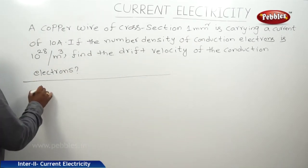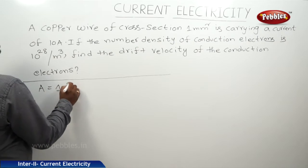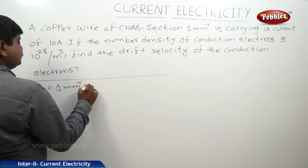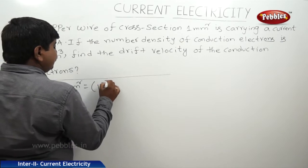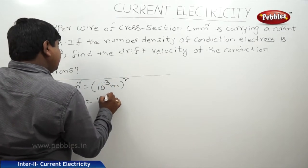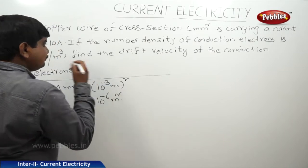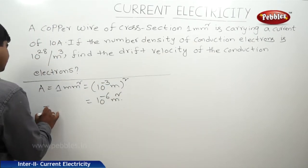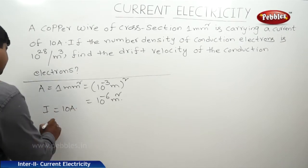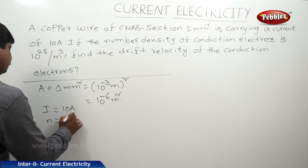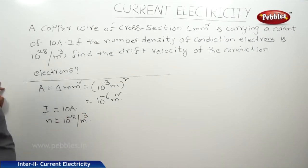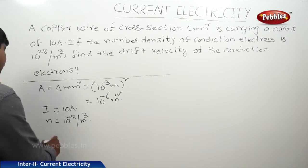The area of cross-section is 1 millimeter square, which we can write as 10 to the power of minus 3 meter whole squared, that is 10 to the power of minus 6 meter square. The current carried by this wire is 10 amperes, and the number density n is equal to 10 to the power of 28 per meter cube.